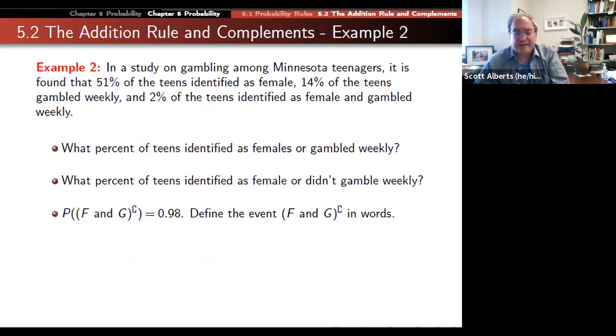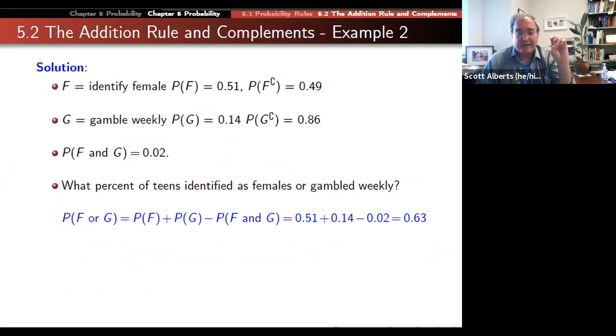Here's data from a study. This is real data now. We found that in that study 51% of the teens identified they were female, 14% of the teens gambled weekly, and 2% of the teens identified as female and gambled weekly. So we can start to break down these probabilities in more and more detail. This is still simple because we're just doing addition and subtraction. We're not doing anything fancy to it, but you can imagine that it gets pretty complicated pretty quickly.